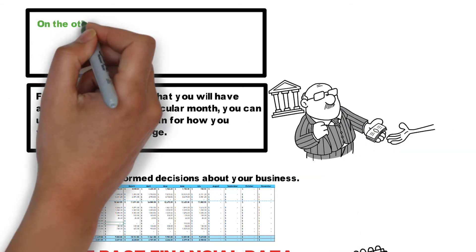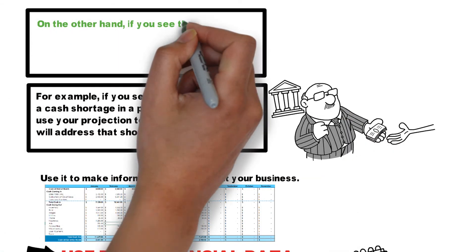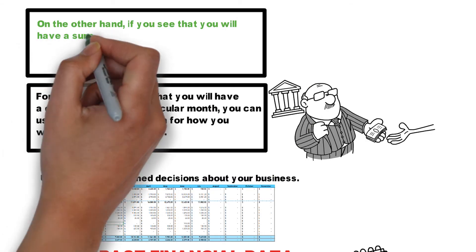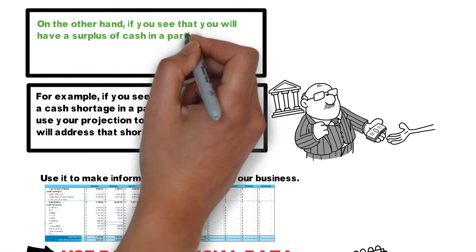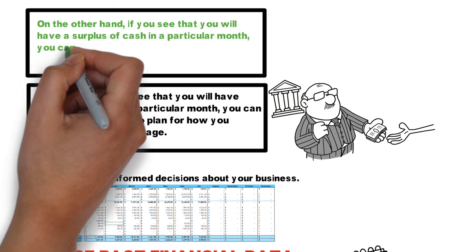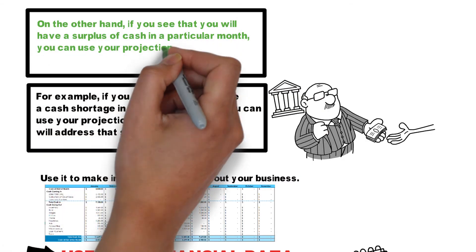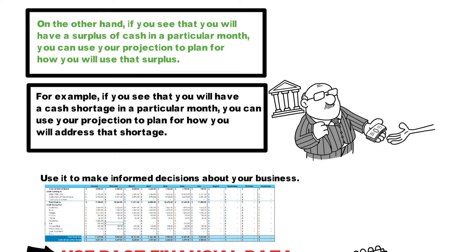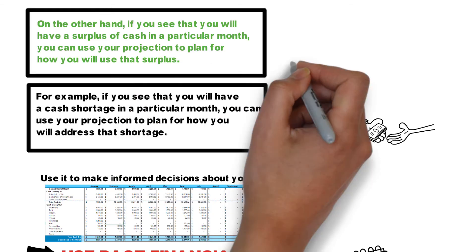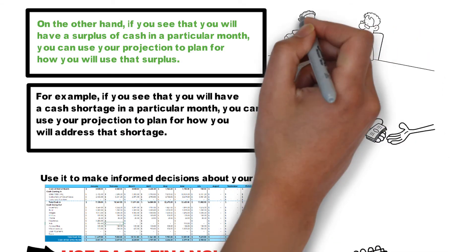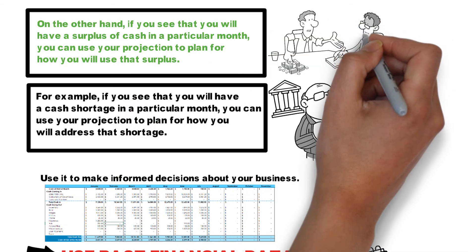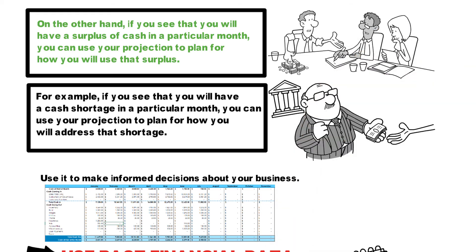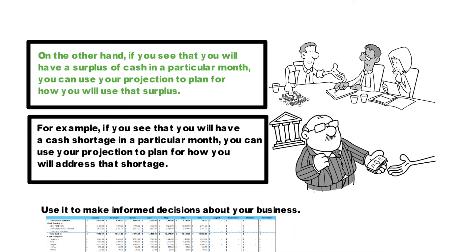On the other hand, if you see that you will have a surplus of cash in a particular month, you can use your projection to plan for how you will use that surplus. This could include paying off debt, investing in new equipment, or saving the money for a rainy day.